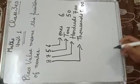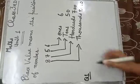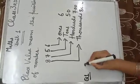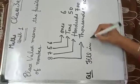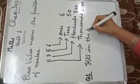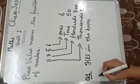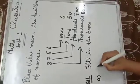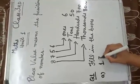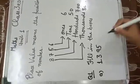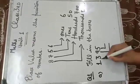Now we start question number 1. Fill in the boxes for the number 1395. Write the place value of each digit.